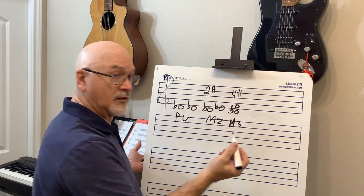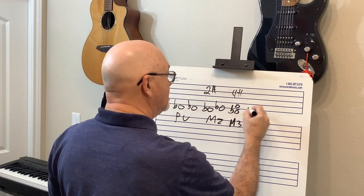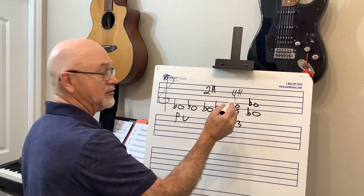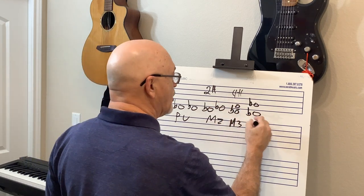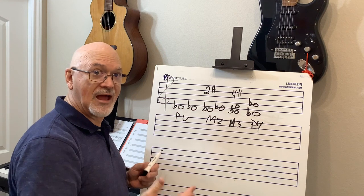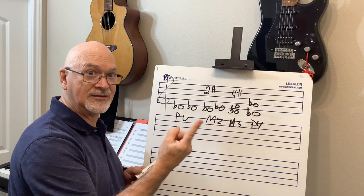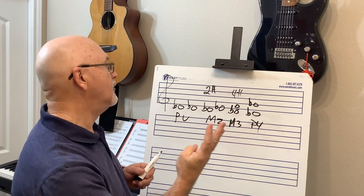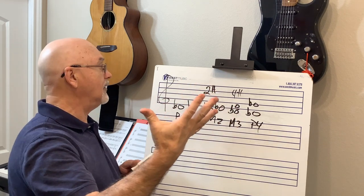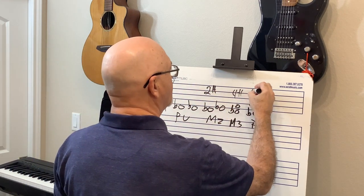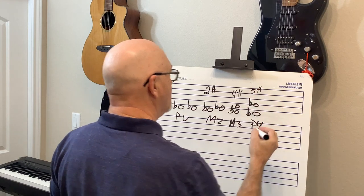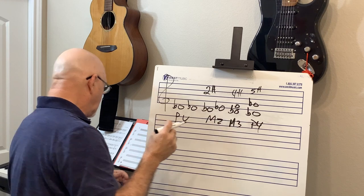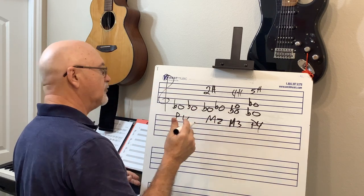D-flat to G-flat is a perfect fourth. Counting the half steps: D-flat to D, D to E-flat, to E, to F, to G-flat — that's five half steps. So a perfect fourth is five half steps.